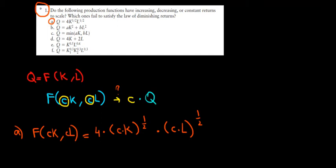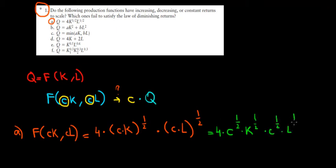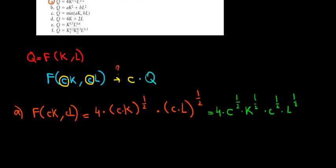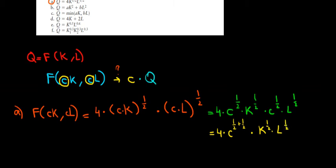Now let's work out the math. We will have four times — and recall, we're multiplying two terms to the same power, so every base is raised to the power separately. We get C to the power one-over-two times K to the power one-over-two, multiplied by C to the power one-over-two times L to the power one-over-two. Now let's group the C terms together. We have four times C to the power one-over-two plus one-over-two — we add exponents keeping the same base — multiplied with K to the power one-over-two and L to the power one-over-two.